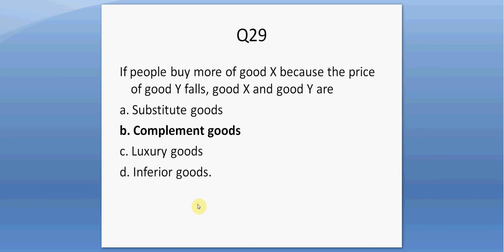Question twenty-nine. If people buy more of good X because the price of good Y falls, good X and good Y are B, complement goods. If the price of good Y falls, such as the price of Blu-ray discs, then the demand for Blu-ray players rises — Blu-ray players and Blu-ray discs are complement goods.